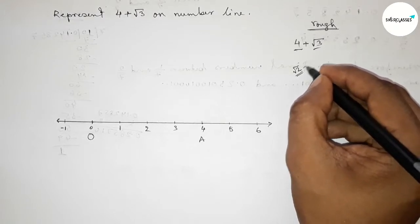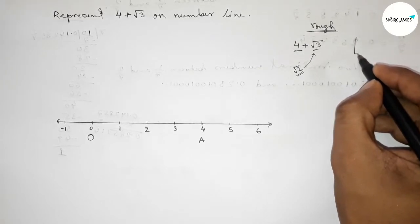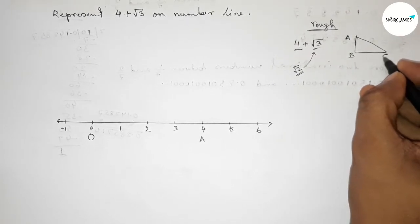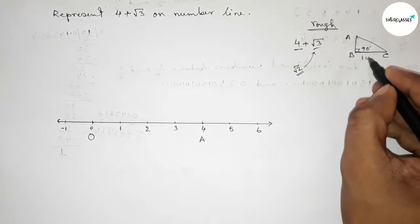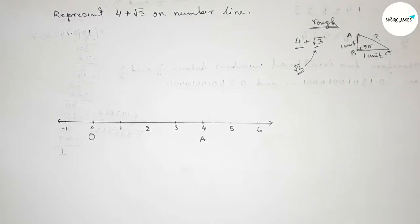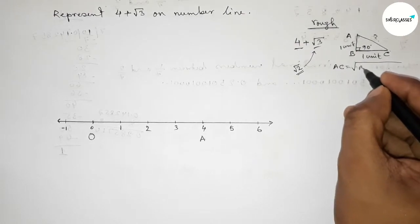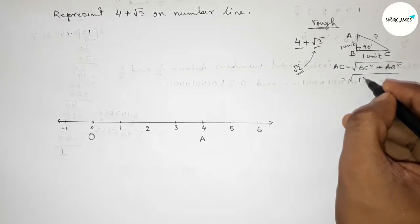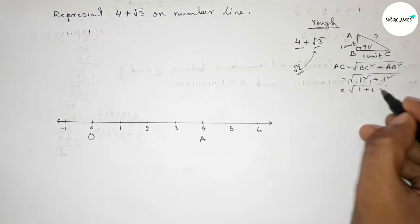Before representing root 3, we first have to represent root 2. Discussing a right angle triangle ABC where this angle is 90 degrees. If we take the base equal to 1 unit length and the perpendicular equal to 1 unit length, then by Pythagoras theorem, hypotenuse equals root over (base squared plus perpendicular squared), which is root of 1 plus 1, equal to root 2 unit.